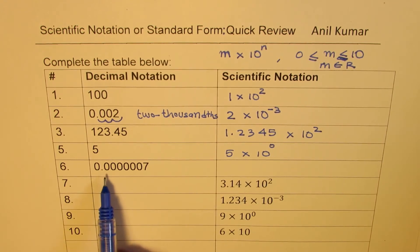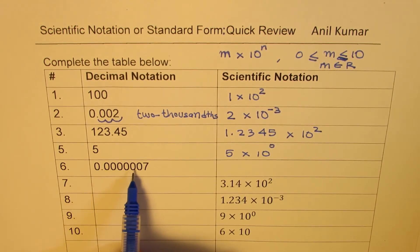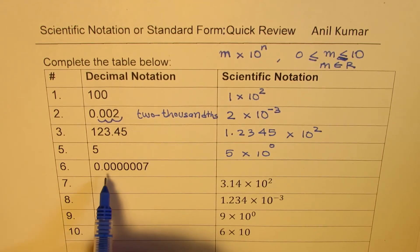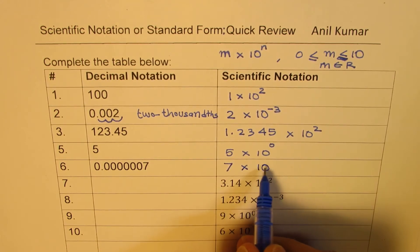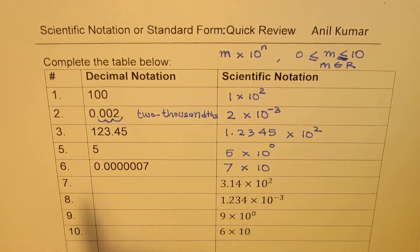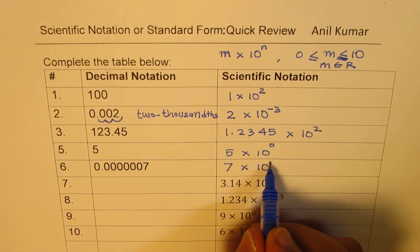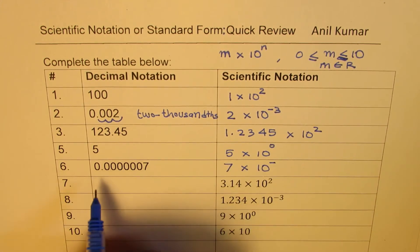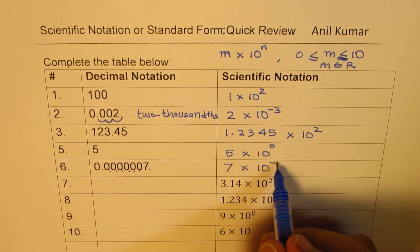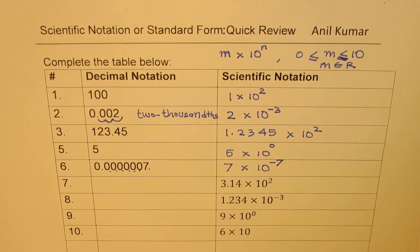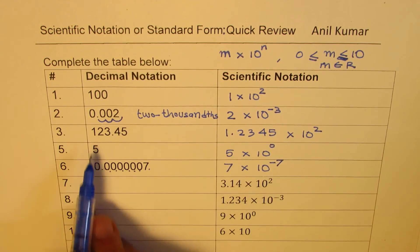Now we have 0.0000007. In this case, you need to write this as 7 times 10 to the power of something. It has to be a negative number since this is very, very small. Counting the decimal places: 1, 2, 3, 4, 5, 6, 7. So it is 10 to the power of minus 7. That is how we get the scientific notation, also called standard form especially in the UK, for all these decimal numbers.